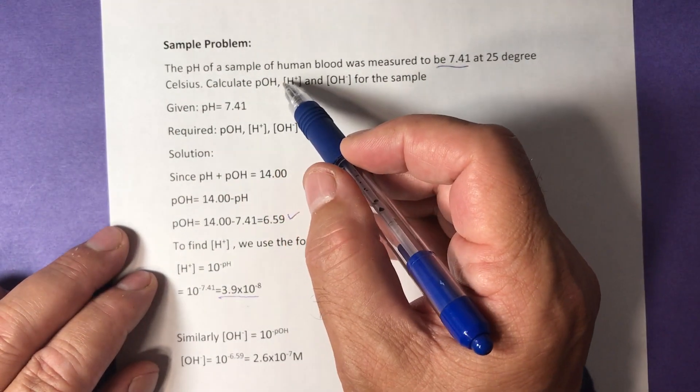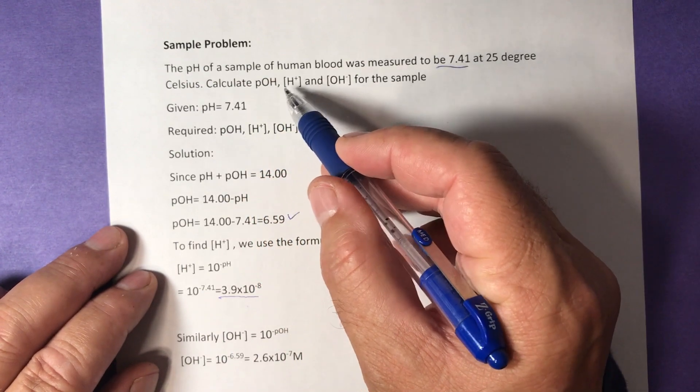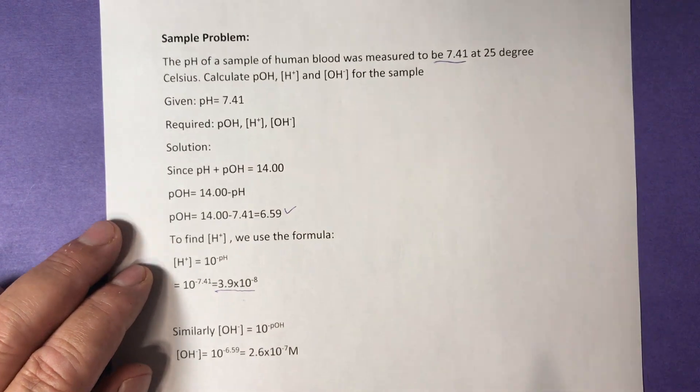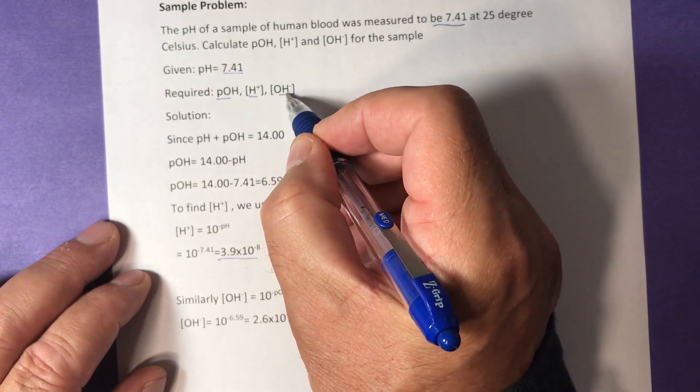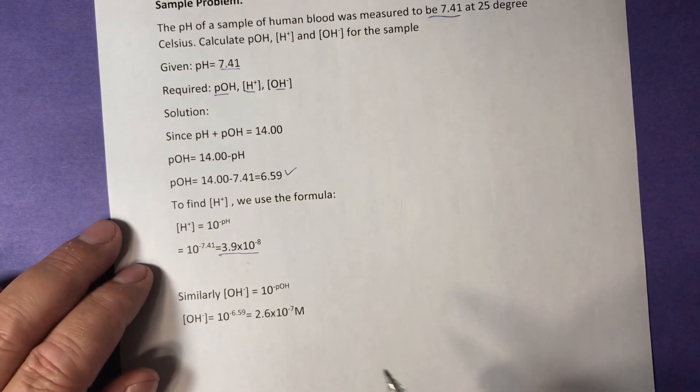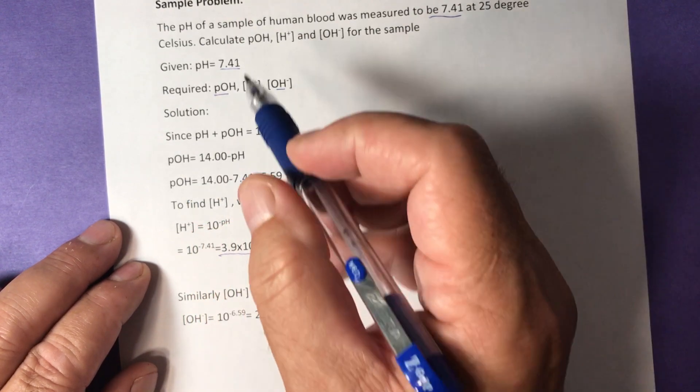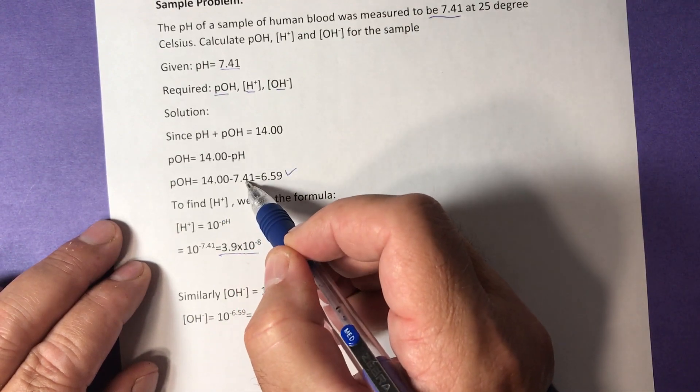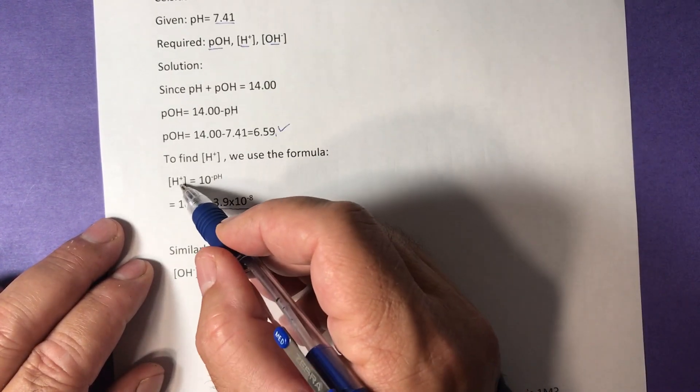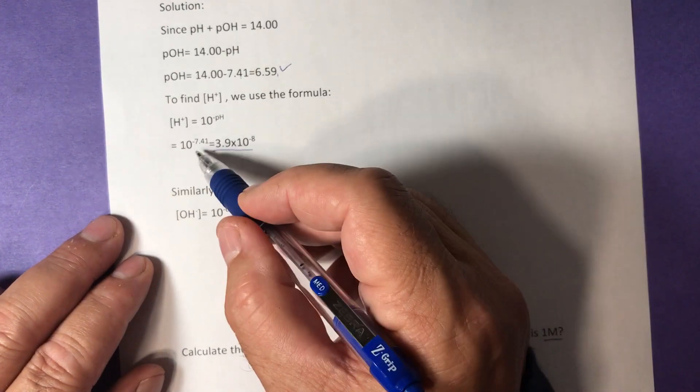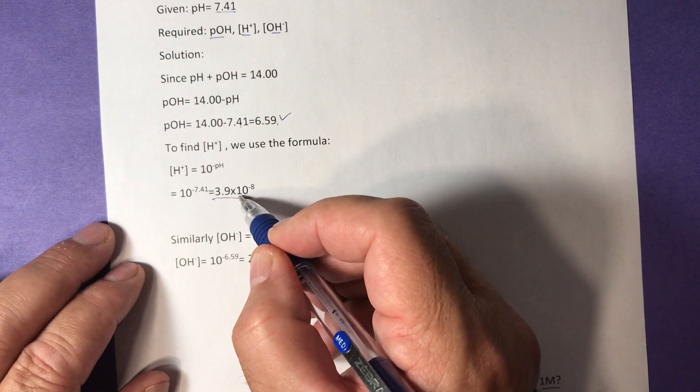Sample problem. The pH of a sample of human blood was measured to be 7.41 at 25 degrees Celsius. Calculate pOH, H+ concentration, and OH- concentration for the sample. What is given? pH is given. Required: pOH, H+ concentration, OH- concentration. We know that pH plus pOH is 14, so pOH is 14 minus the pH, which is given the value of 7.41. 14 minus 7.41 equals 6.59, which is the pOH. To find the H+ concentration, we use the formula: H+ equals 10 to negative pH, 10 to negative 7.41, which is given in the problem. And we have 3.9 times 10 to negative 8.